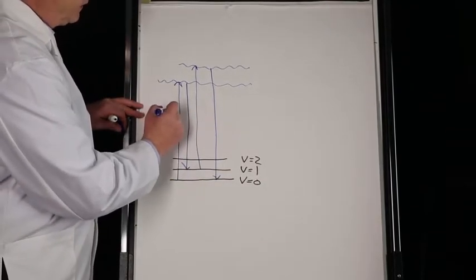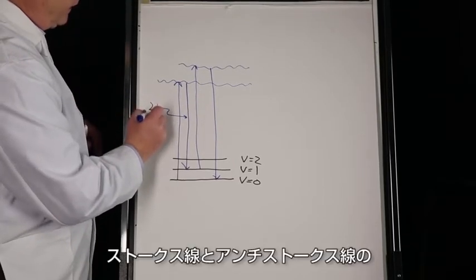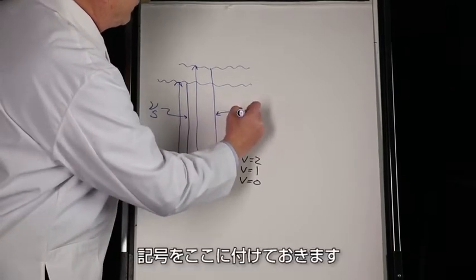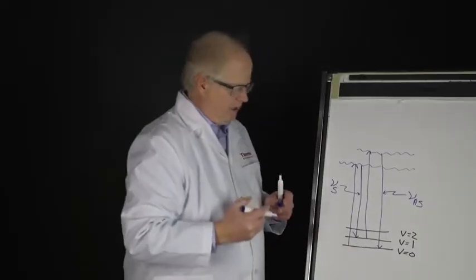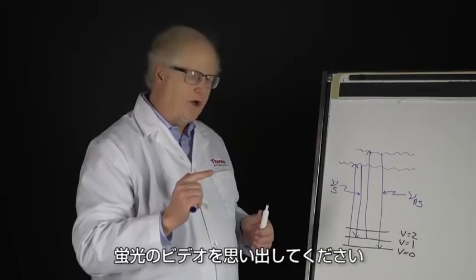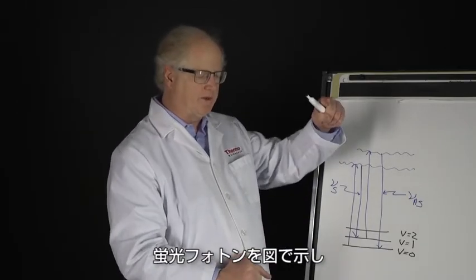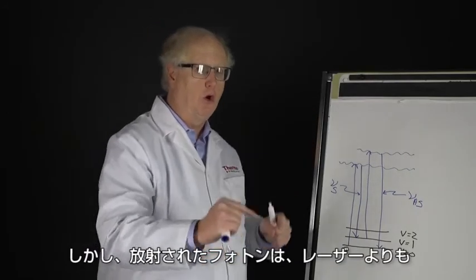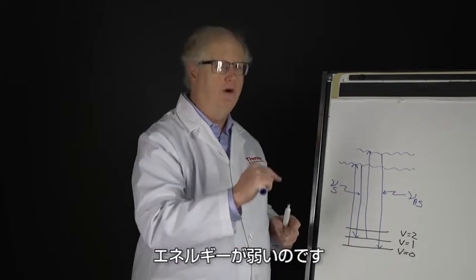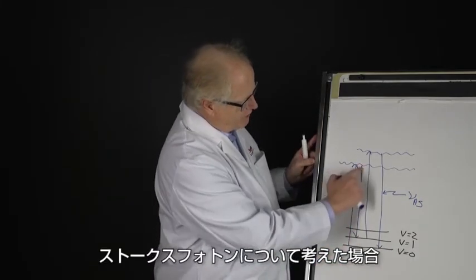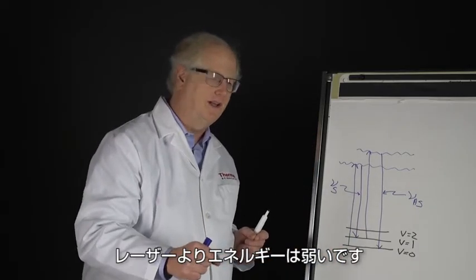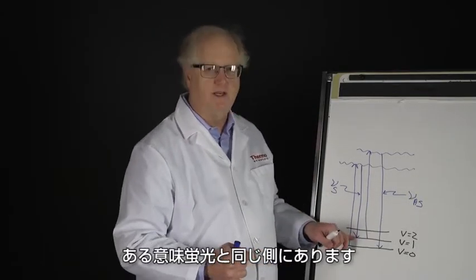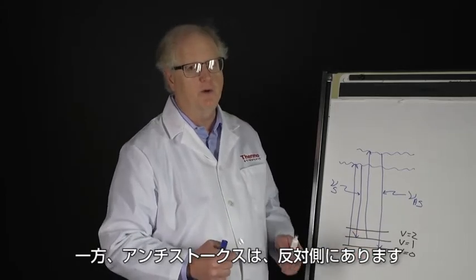Now in this case, the Stokes line and the anti-Stokes line are marked here. Notice a couple of things about them. Remember, if we go back to that fluorescence video, we showed that the fluorescent photon—you had absorption followed by emission—but that emission photon was lower in energy than the laser. If we look at the Stokes photon, it is also lower in energy than the laser, so in a sense it's on the same side, so to speak, of the laser emission as is the fluorescence. On the other hand, the anti-Stokes is on the other side. The anti-Stokes is higher in energy.